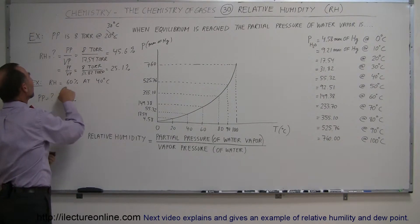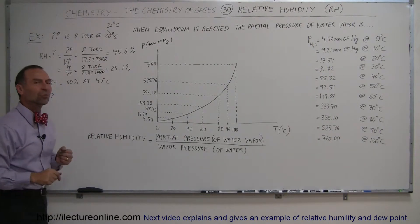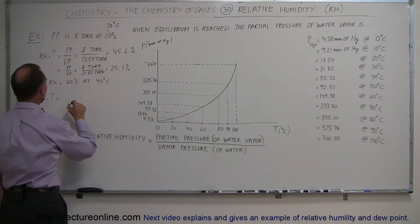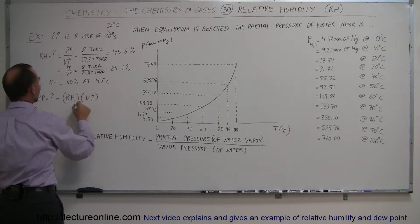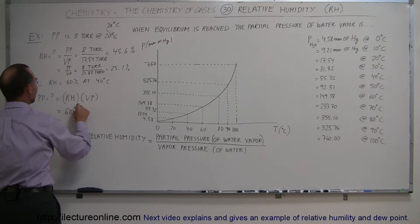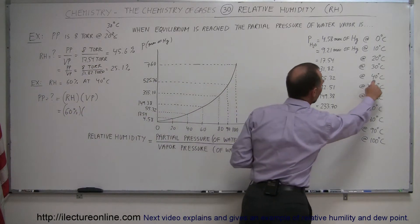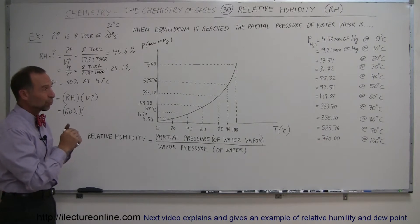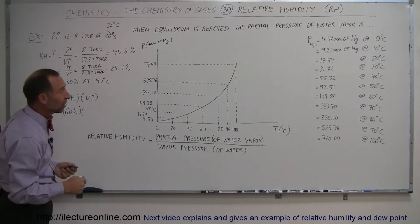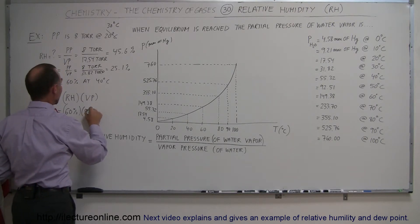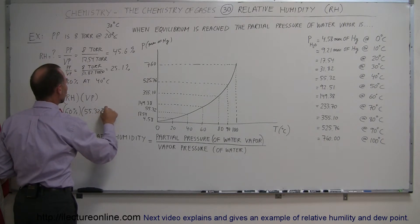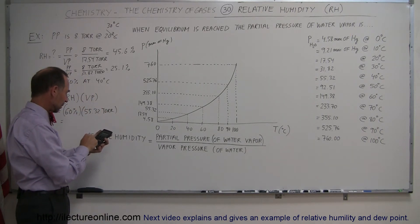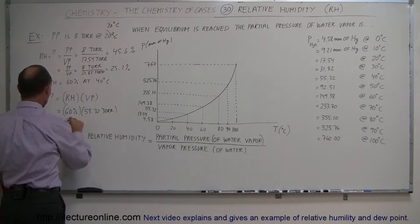As an example, what if the relative humidity was 60% at 40 degrees centigrade — what is the partial pressure of water? In this case, the partial pressure is equal to the product of the relative humidity times the vapor pressure. The relative humidity is 60%, and looking at the table, the vapor pressure at 40 degrees centigrade is 55.32 torr — meaning the partial pressure of water vapor can be as high as 55.32 torr, which is about 7 or 8% of the total air pressure. Taking 60% of that: 55.32 times 0.6 equals 33.19 torr.